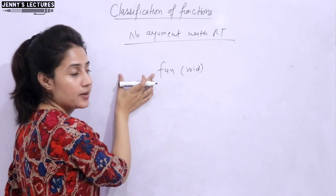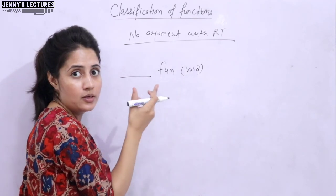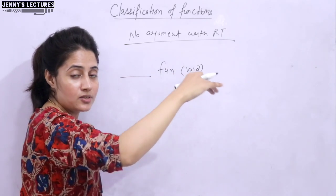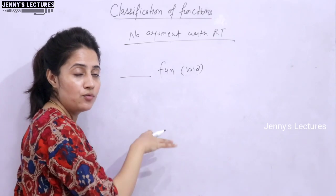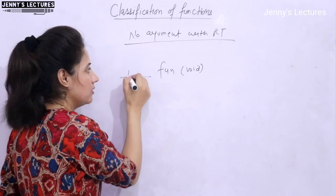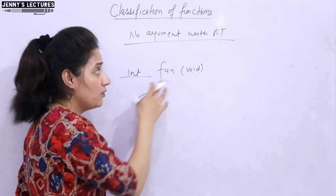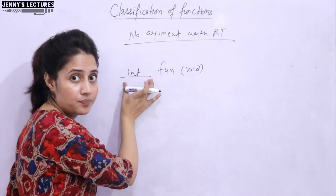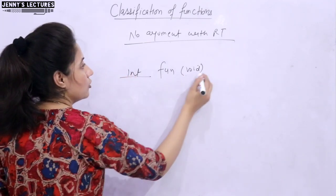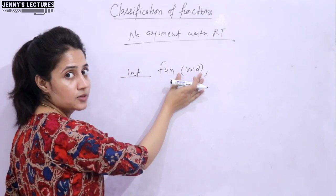With a return type, the return type should be something — maybe int, char, float, or maybe a pointer. Here we won't go to the pointer level yet; we will discuss that one by one. For now, we'll see programs where the return type is either int, float, or char. This is the general declaration of a function which has a return type but no argument.